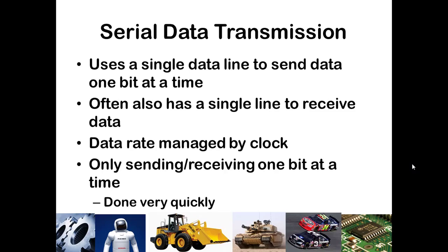How does serial data transmission work? It sends a single bit, one at a time, across a data line, and it does this very quickly so that you can send a lot of data in a short amount of time. It really minimizes the hardware that's necessary because you only have one single data line to transmit all of your data. That data rate is managed by a clock, so you send out data at a fixed rate so that it can be received on the other end at a fixed rate.